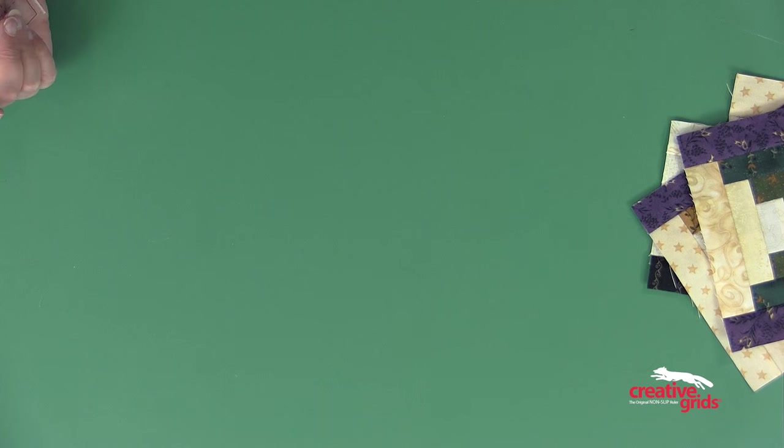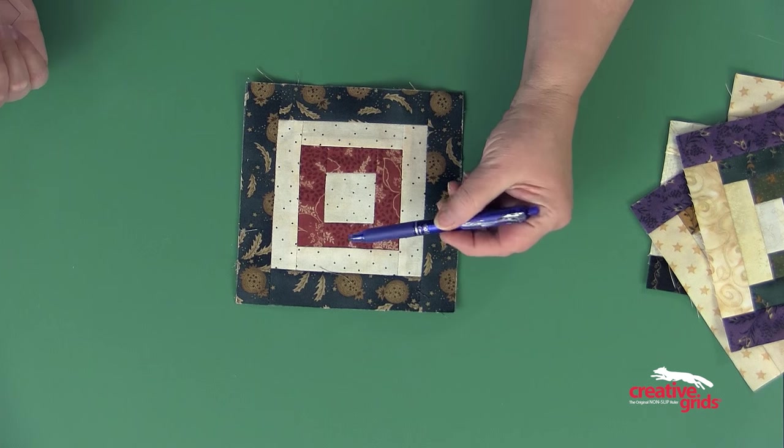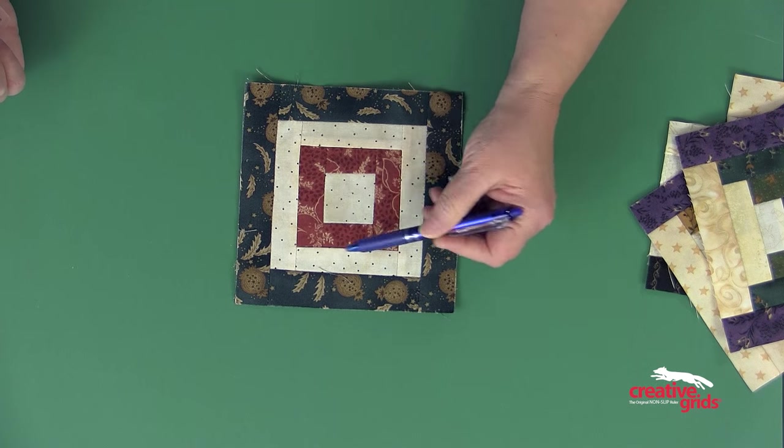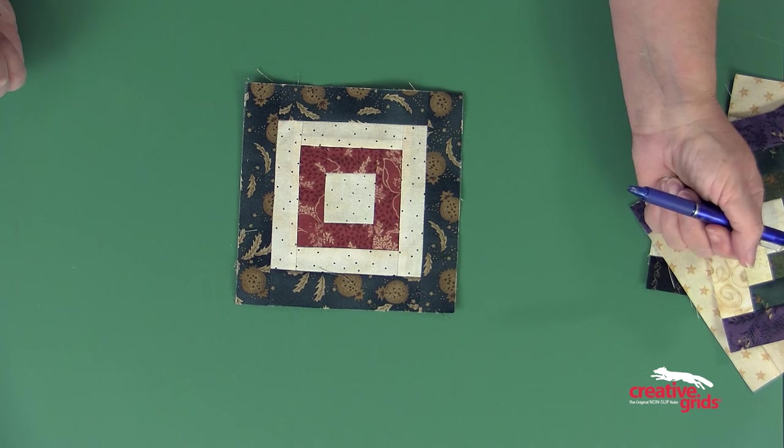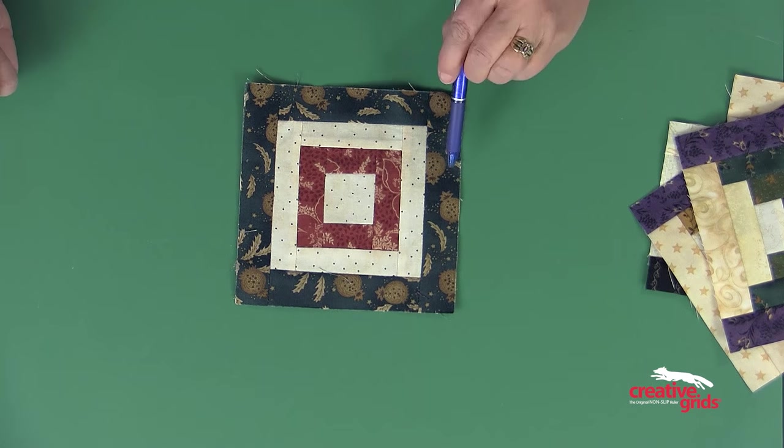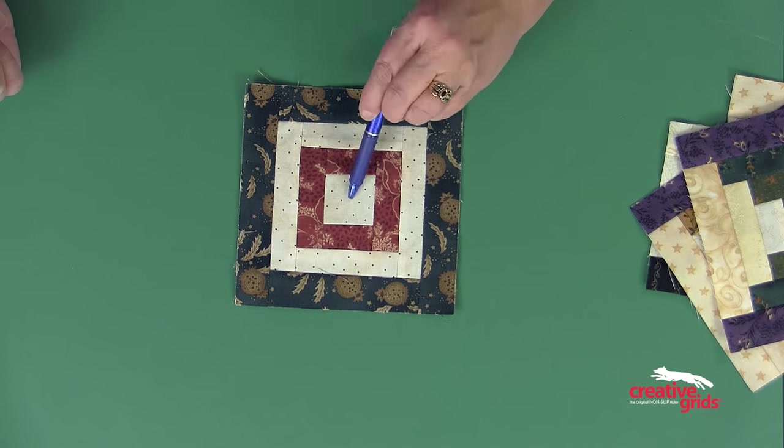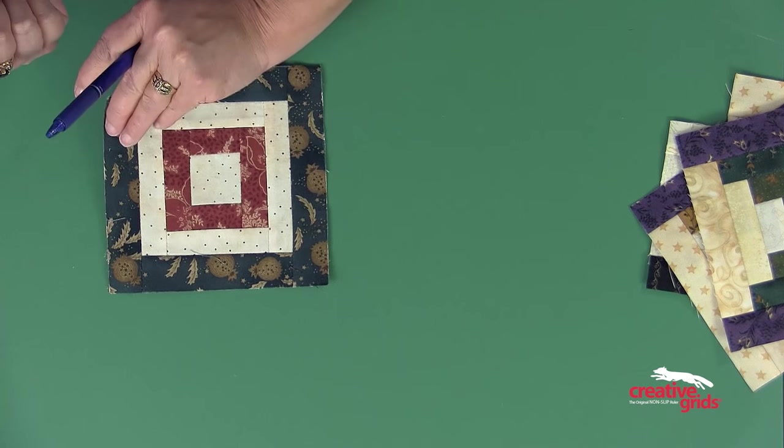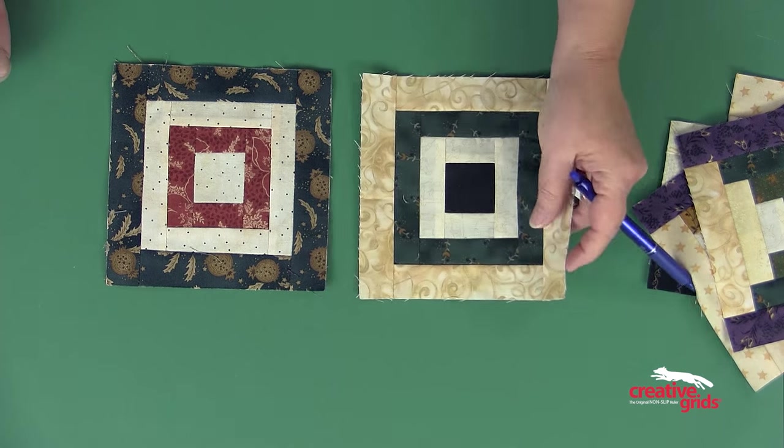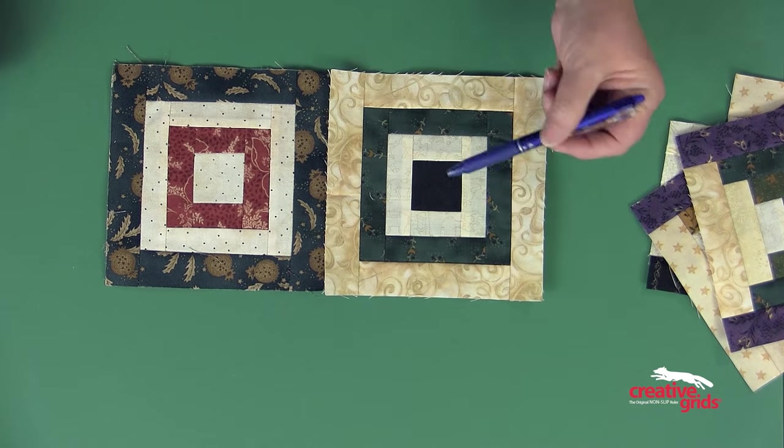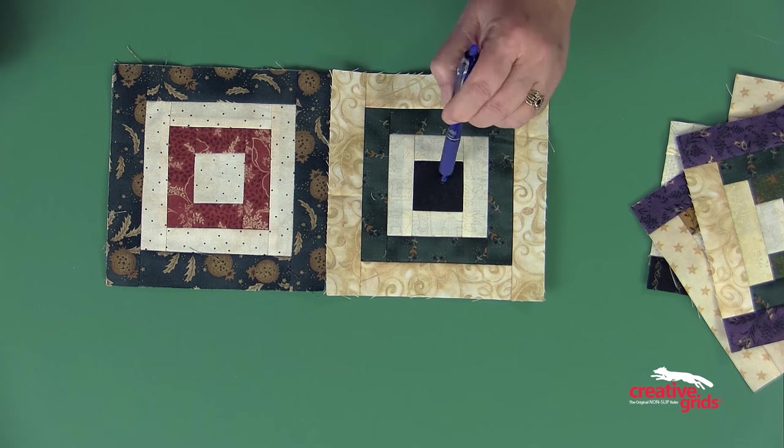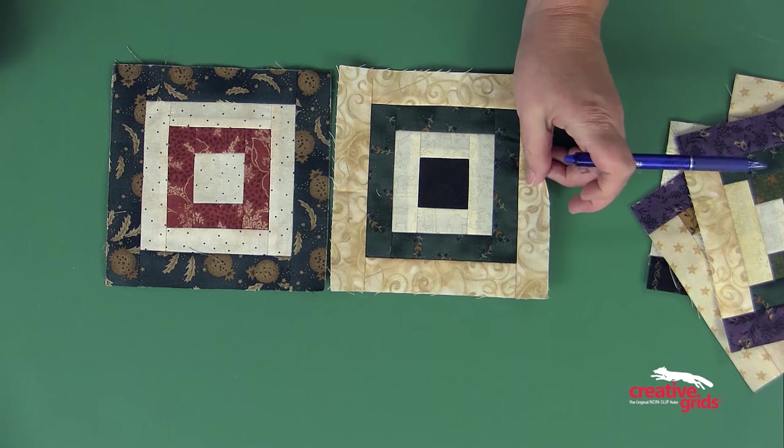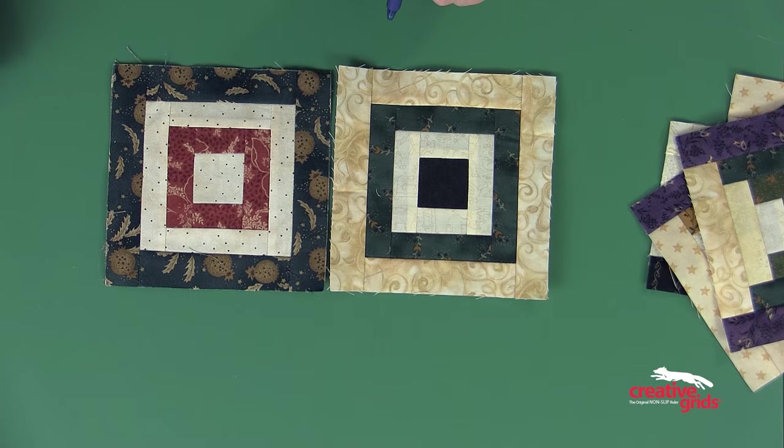If I want to do a courthouse steps, but I'm using the same fabric for my entire round one, round two, and round three, you get a square and a square log cabin. In this particular case, because there's three rounds, I started with a light. If I am combining it in a pattern, I would make the opposite squares starting with a dark, because if I start with a dark, it's going to end with a light, and then I can put these together to create a design.